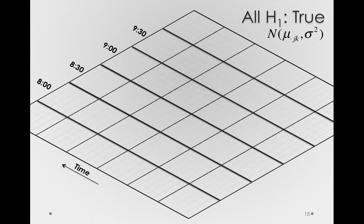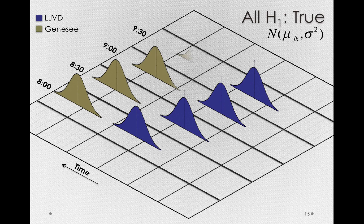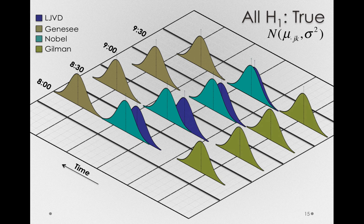Let me show you how this is going to work. Starting with La Jolla Village Drive — here are those normal distributions, each with the same variance, at the means for what we observed for that route. Now Genesee, which on average was longer, has the means and distributions for each time, again with the same variance. Nobel Drive is pretty close to La Jolla Village Drive, and finally Gilman Drive is down there with the lowest time on average.